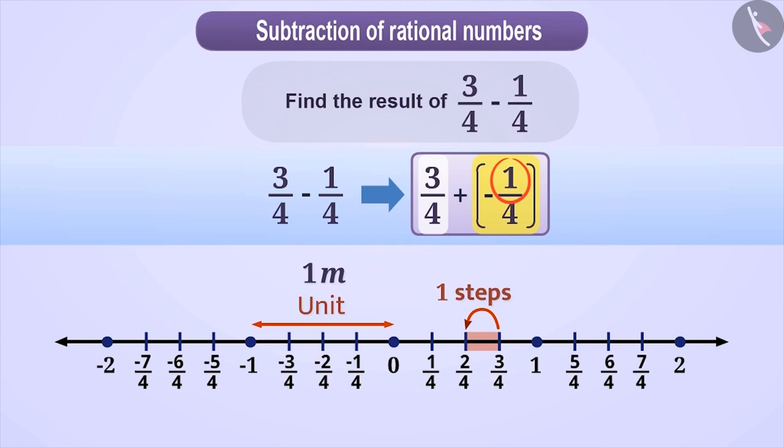Since 1 step is equal to 1/4 unit, therefore 1 step means a distance of 1/4 meter. So we can also say that we move 1/4 unit distance to the left of 3/4. With this, we arrive at 2/4 which is the result of 3/4 + (-1/4).